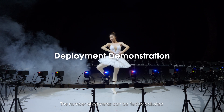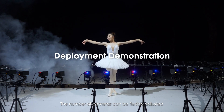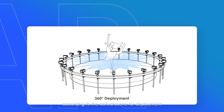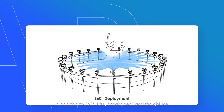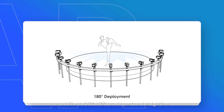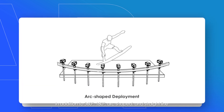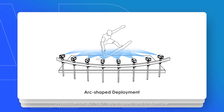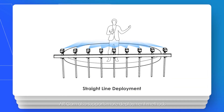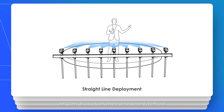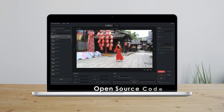The number of cameras can be flexibly adjusted according to the actual scene for deployment. In addition to 360 degrees, 180 degrees, arc-shaped, and straight-line configurations, AR Cam also supports more deployment methods.